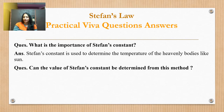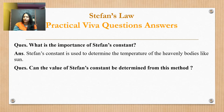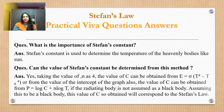Can the value of Stefan's constant be determined from this method? Yes, absolutely. Taking the value of n as 4, the value of the constant C can be obtained from the equation E equals sigma times (T to the power 4 minus T0 to the power 4), where T0 is the temperature of the surroundings.